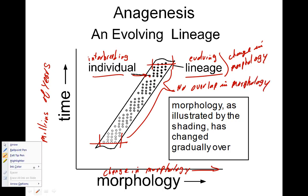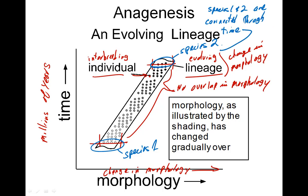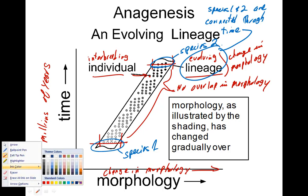This lineage is evolving because there is a change in morphology over that period of time. If we looked at two populations at two different times and looked at their morphology, we see there is no overlap. So if we were just to look at these two endpoints, we would say this is species one and up here, species two. But they're connected through time through this evolving lineage, so species one and species two are connected in time.